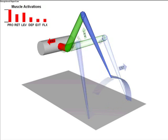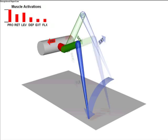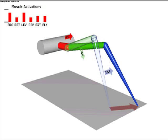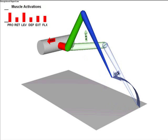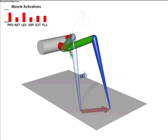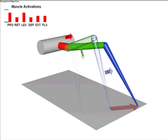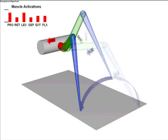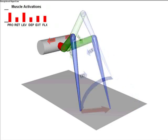Modifying the set points that determine when the joints change direction and the muscle activation levels that determine joint speeds can allow the footpath to move in different directions. This provides the ability for the robot to turn.